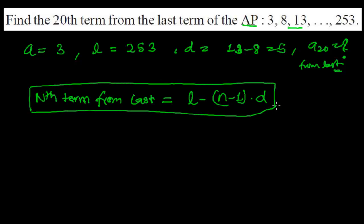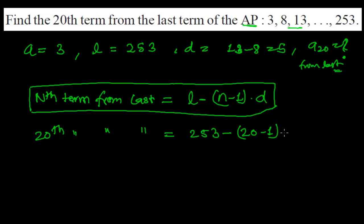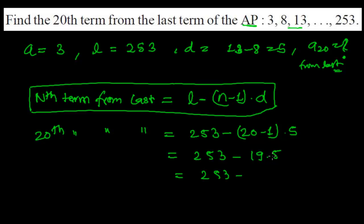Now we need to find the 20th term. So the 20th term from the last equals L, which is 253, minus (N minus 1), so that is (20 minus 1), times the common difference, which is 5. That gives us 253 minus 19 times 5.